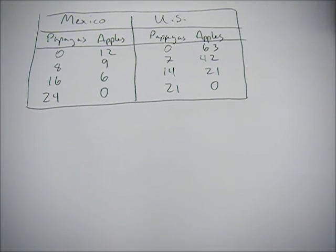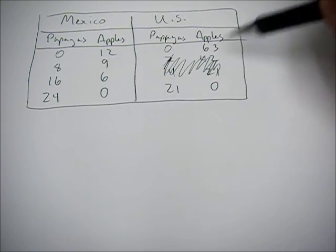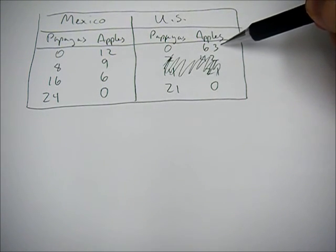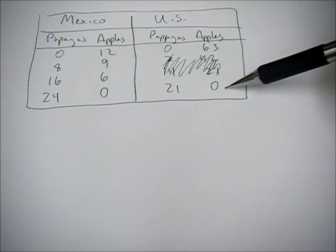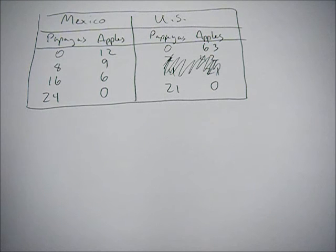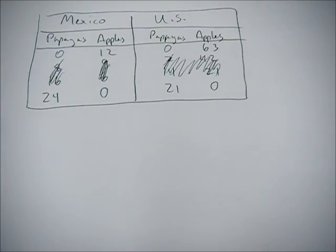So it's really easy if you just look at the goods that each country can specialize in. Forget about these middle things and just look at 63 apples, 0 papayas, 21 papayas, 0 apples. This trick only works if the PPF is linear, but 99% of the time the PPF will be linear in your introductory classes. So get rid of those intermediary steps.